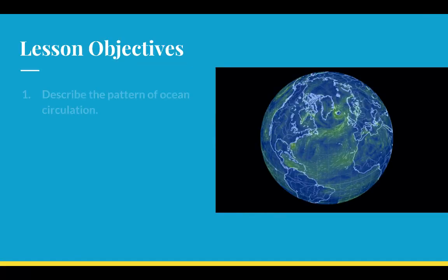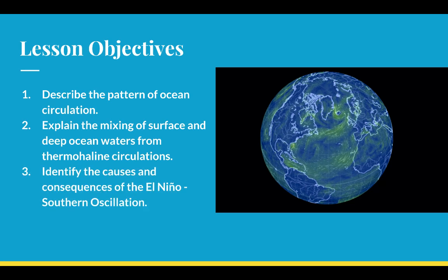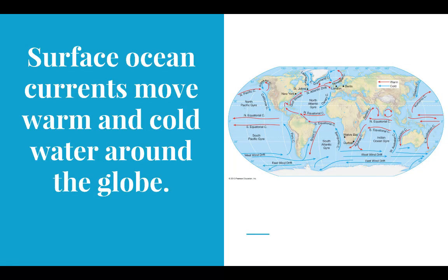By the end of this lecture you should be able to describe the pattern of ocean circulation, explain the mixing of surface and deep ocean waters from thermohaline circulation, and identify the causes and consequences of El Niño — what we refer to as the Southern Oscillation.